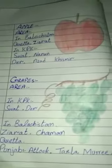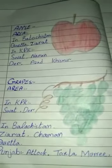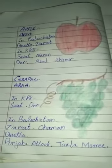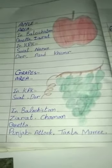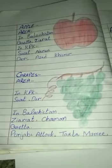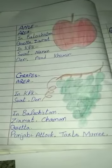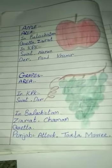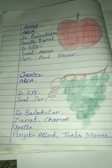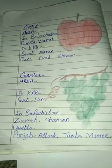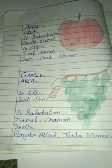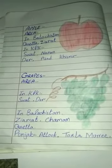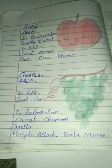Food number three is apple. Apple is grown in Pakistan, in KPK, in Punjab, and in some cities across Pakistan.